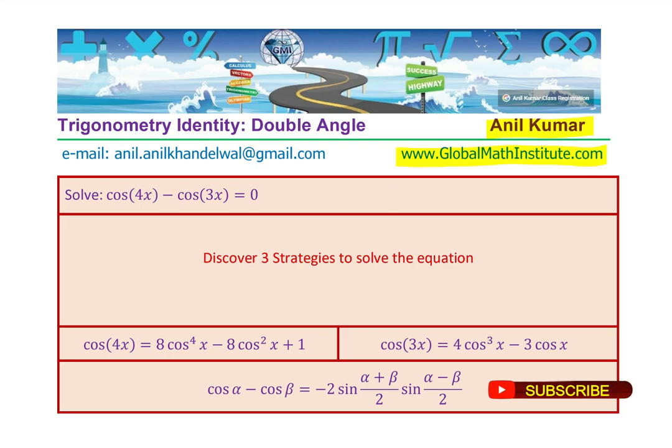Now, to solve this equation, you might need some formula which we have provided. Cos 4x is 8 cos to the power of 4x minus 8 cos square x plus 1. Cos 3x can be written as 4 cos cube x minus 3 cos x. We also have a very important formula which is cos alpha minus cos beta equals to minus 2 sin alpha plus beta by 2 times sin alpha minus beta by 2.